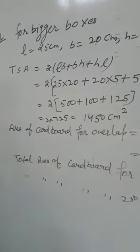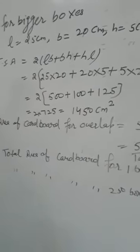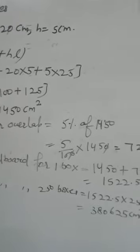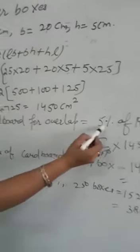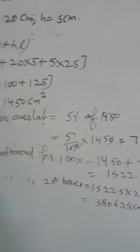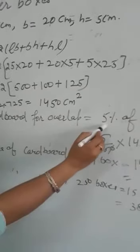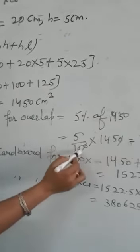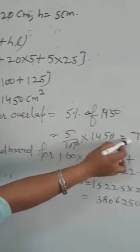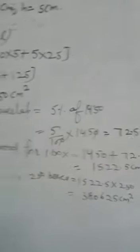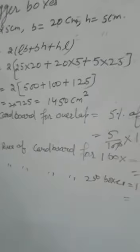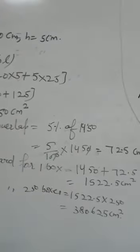Now they are saying 5% of cardboard is required for the overlapping as we have to cover the box. For that we will find 5% extra area, area of cardboard for overlap that is 5% of 1450. Now here 5 upon 100 into 1450 is equal to 72.5 cm square. This is the required extra area for one box.